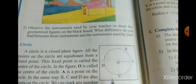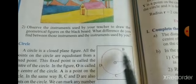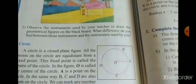The definition of the circle is a closed plane figure, all the points on the circle are equidistance. B, A, C, D, like that type.